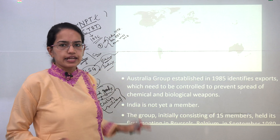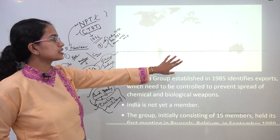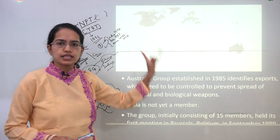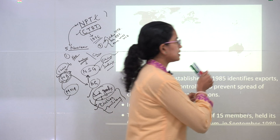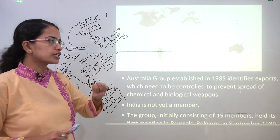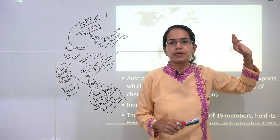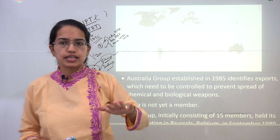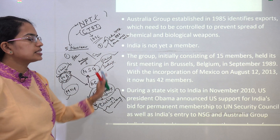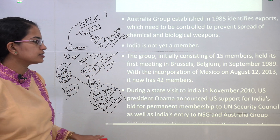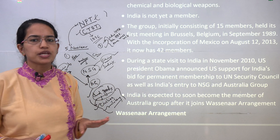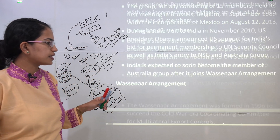The Australian Group was established in 1985 with the idea of restricting exports of chemical and biological weapons technology only to member countries. When technology is supplied only to group members, the developed nations within the group become more powerful compared to others, giving them an undue advantage. Initially it had 15 members and now has 42. Former US President Obama supported India's entry into both the NSG and the Australian Group.